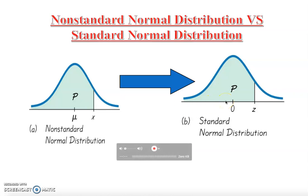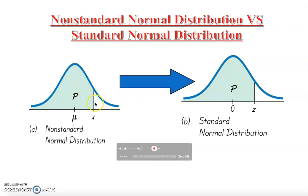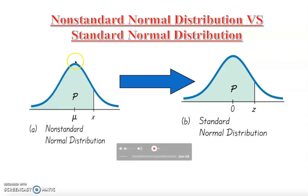Before continuing, I want to make sure you understand what a normal curve is. A normal curve is basically like your appearance in a mirror — everyone has seen their face in a mirror. If you look at your mirror, right from the forehead to the nose and coming down the cheek, you see it is exactly symmetric on both sides.